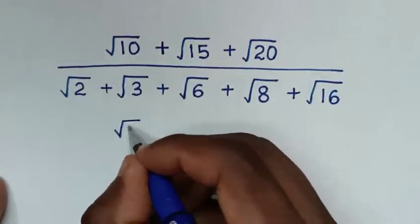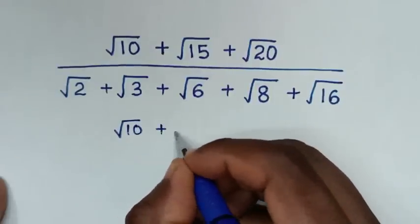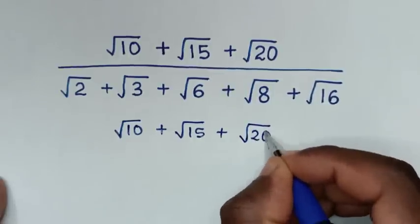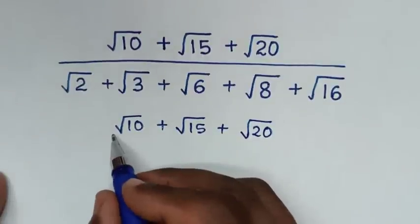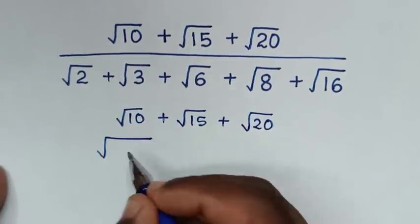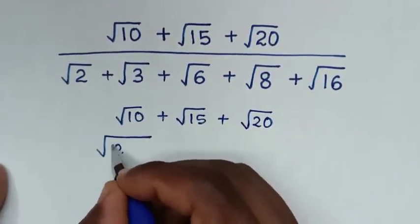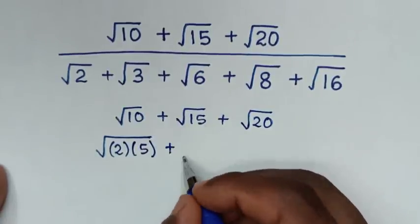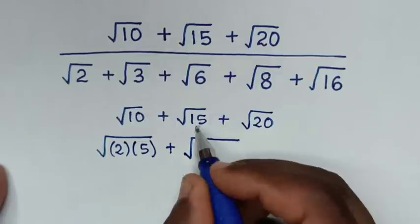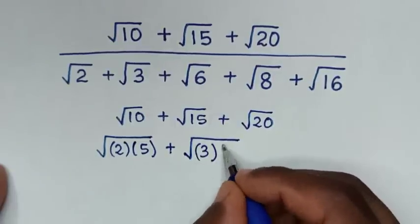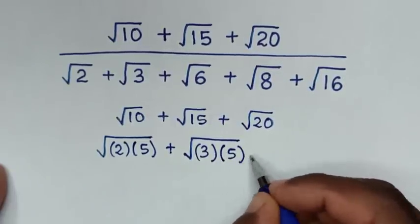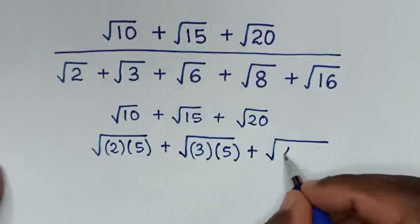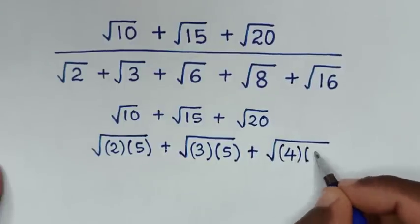which is square root of 10 plus square root of 15 plus square root of 20. Square root of 10 is the same as square root of 2 times 5. Plus square root of 15, which is square root of 3 times 5. Plus square root of 20, where 20 is 4 times 5.